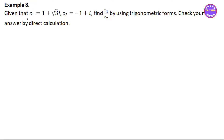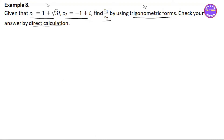In this example, you can use trigonometric forms or direct calculation. So in the trigonometric form, we check our answer using direct calculation. So we need the trigonometric form to set up the complex number in the form x1, y1, r1.